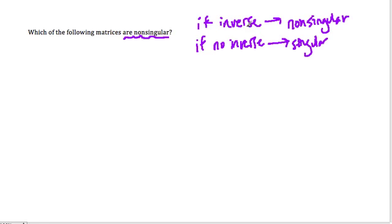So if there is an inverse, then it's non-singular. And in this problem, they give us several matrices to choose from. We've got to figure out which ones have an inverse.